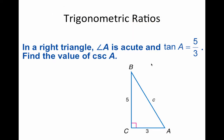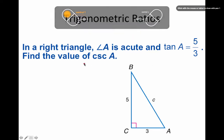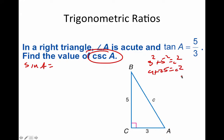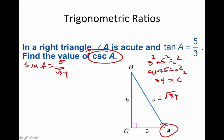Find the cosecant of A, given that the tangent of A is 5/3. Find the sine of A first, then flip it. Use the Pythagorean theorem: 3² + 5² = c², so 9 + 25 = 34, and c = √34. The sine of A = 5/√34, so the cosecant of A = √34/5.